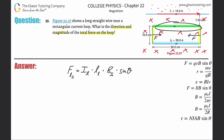Now the top piece: current is pointing to the left. Using right-hand rule number one — point your thumb to the left, fingers pointing into the page — your palm faces downward. So the force on the top segment points down. For the bottom piece: current points to the right. With thumb right and fingers into the page, your palm faces up — force points upward.